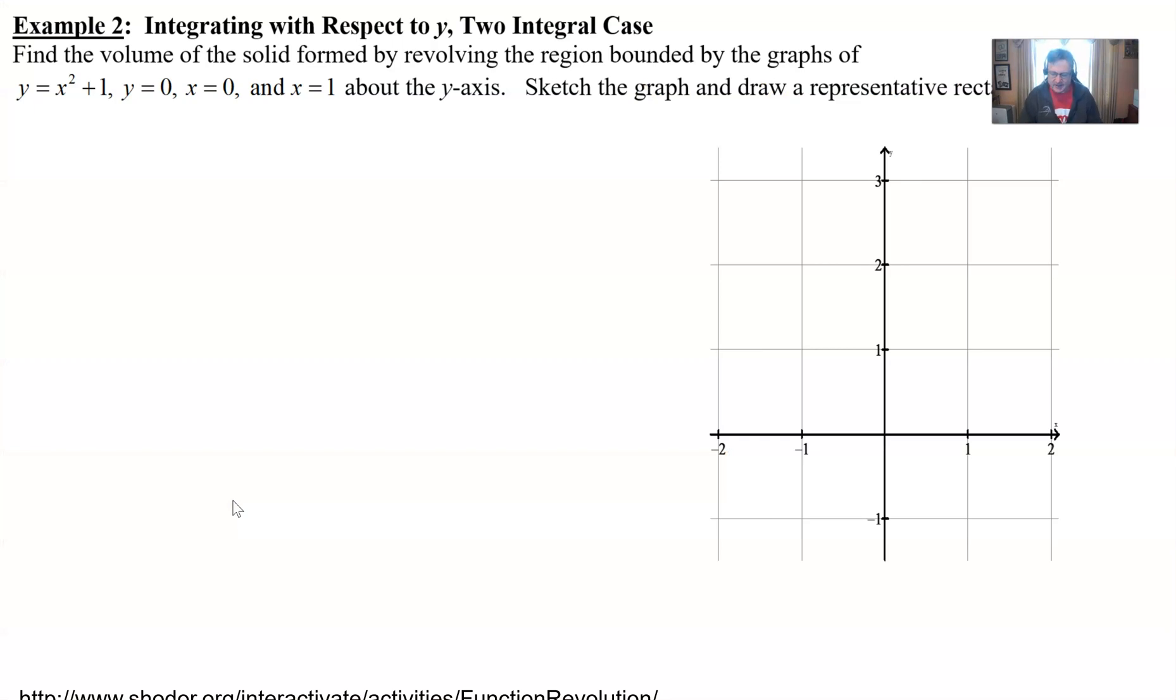What we've got here is a situation where we're asked to find the volume of the solid formed by revolving the region bounded by the graphs of y equals x squared plus one, y equals zero, x equals zero, and x equals one about the y-axis. A lot of stuff going on there. As always, we're going to sketch and graph the region, shade it, and draw in the rectangles.